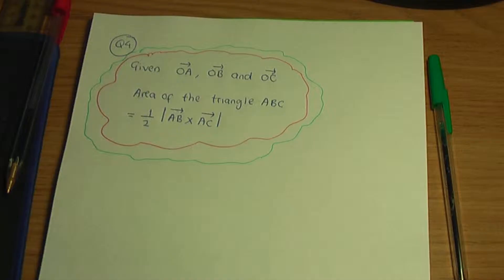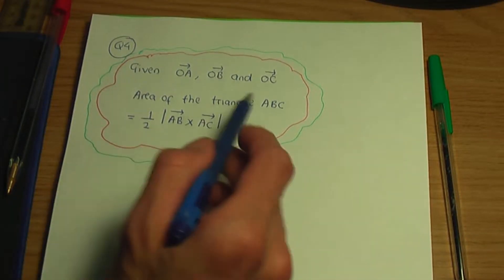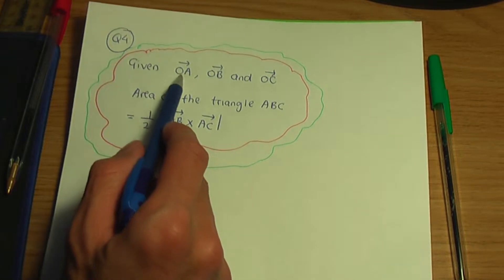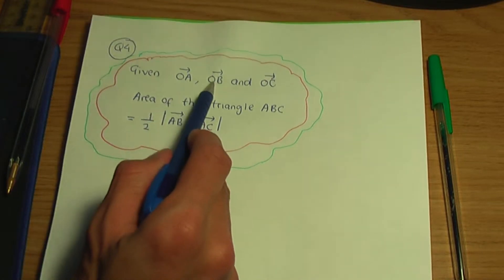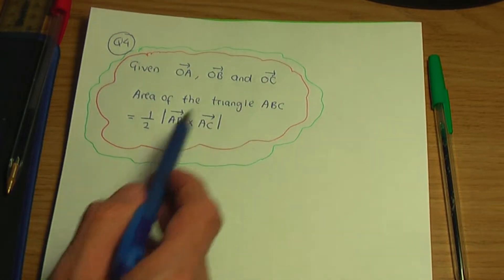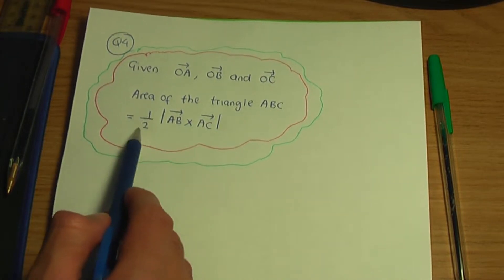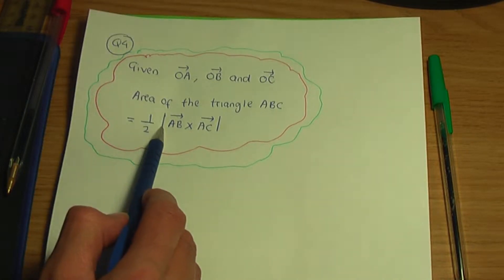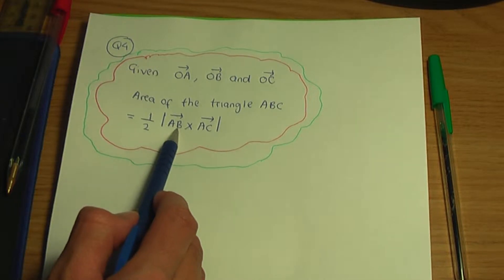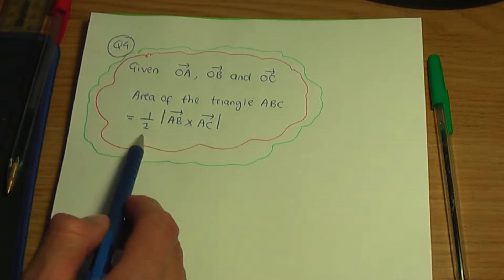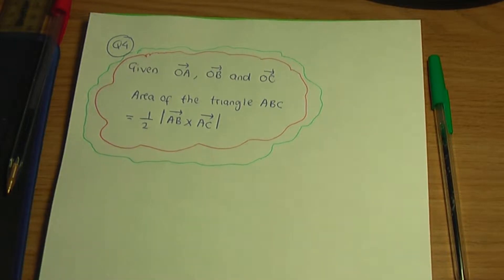Back to the paper and pen. In order to work out the area of the triangle, if you're given the vectors OA, OB and OC, the formula to calculate the area of the triangle is half the modulus or the magnitude of AB cross AC. So this is the formula that we need to use in order to do this question.